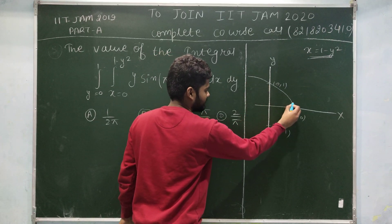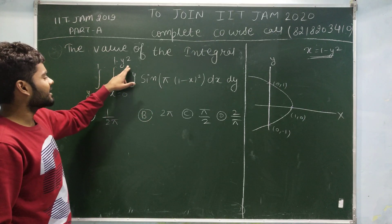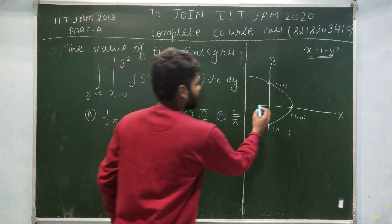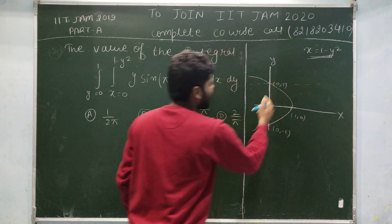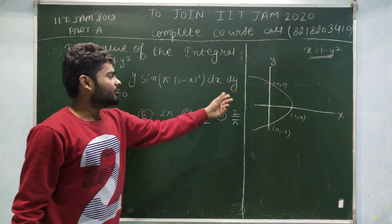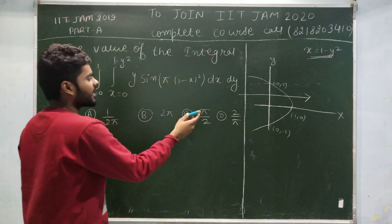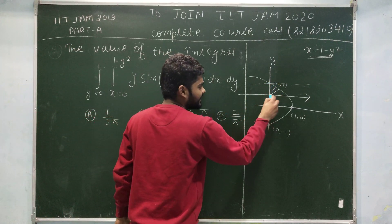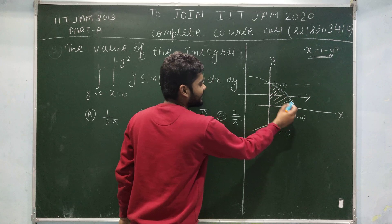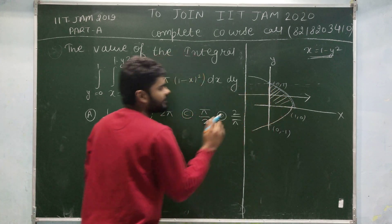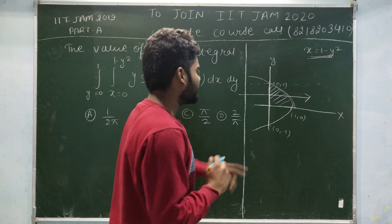Now you can easily get the shape of the parabola. In the question, x is varying from 0 to 1 minus y squared and y is varying from 0 to 1. y equals 0 means the x-axis, and y equals 1 is a horizontal line. Since the outer limit is y, we put a line parallel to the x-axis. You can see y varies from 0 to 1, x varies from x equals 0 to the curve x equals 1 minus y squared. Now we have to change the order of integration.